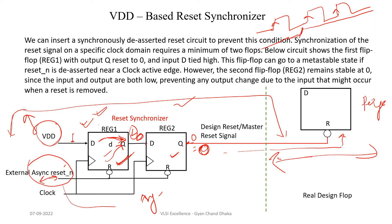At this clock edge, flip-flop one output will become one. But the flip-flop two output is still going to be zero only. In the next clock edge, since flip-flop one output is now one, the output of the second flip-flop will also become one. This is our master reset signal which will go to our design. So this is scenario one of our synchronizer's functionality.